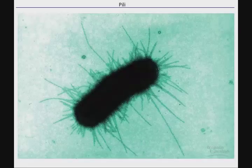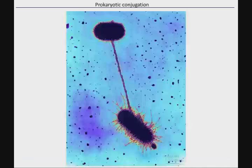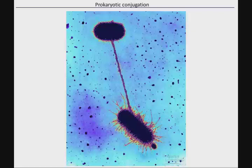We can look at some of the physical characteristics, such as whether they have pili or not. Those pili can be used in what's called prokaryotic conjugation — the closest thing that bacteria come to having sex, where they exchange genetic material through a pilus. This is one of the reasons why antibiotic resistance can spread so quickly, even among different species of bacteria.